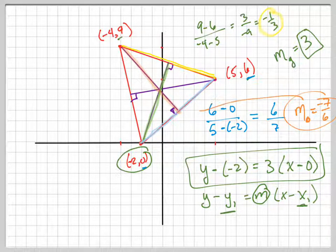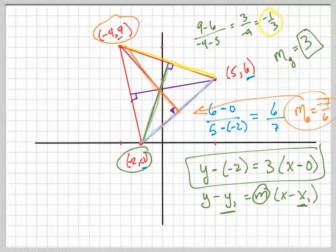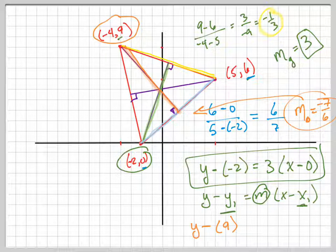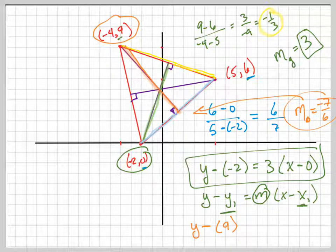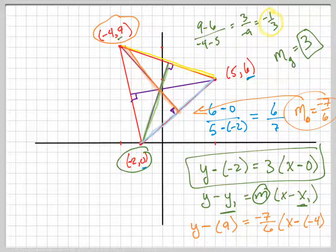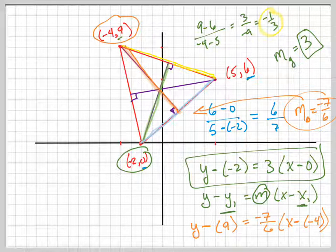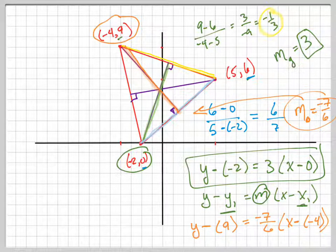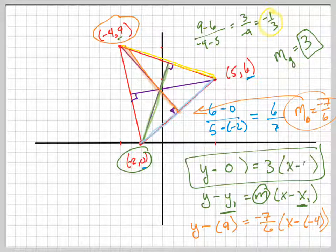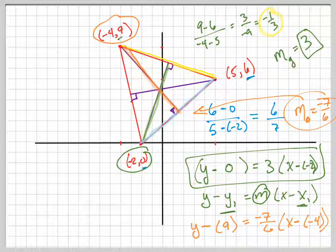Now, if that slope of that line is negative 7 over 6, and that line goes through that point, what's the equation going to be? Y minus 9 equals negative 7 over 6 times X minus... Y minus Y1 equals the slope, negative 7 over 6 times X minus. Be careful with your signs here. Did I write the other one wrong? You're right, I did. Thank you for pointing that out. This one's wrong. It should be Y minus 0, X minus negative 2. Don't make stupid mistakes like I just did.